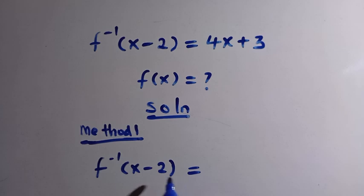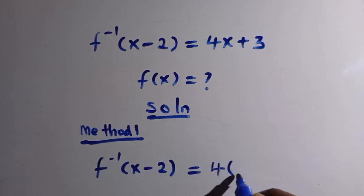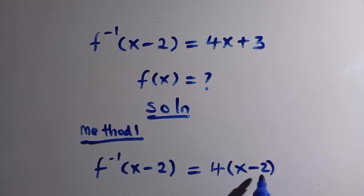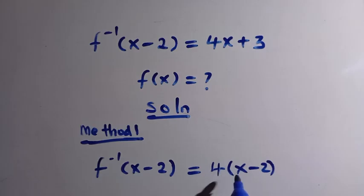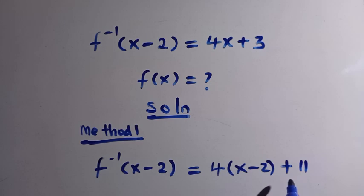We want to make the right-hand side also have x minus 2, so let's see how we can form-manipulate it. We rewrite it as 4 times (x minus 2). When we expand this: 4 times x is 4x, and 4 times minus 2 is minus 8. Adding 3, we have 4x minus 8 plus 3, which means we need to add 11 to get 4x plus 3.